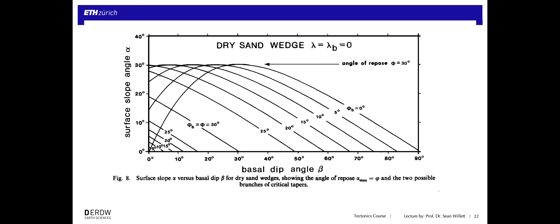For real accretionary wedges, we're mostly looking at basal dips under 10–20 degrees and surface slopes under 10–20 degrees. There is a complete set of solutions for this. For a dry sandbox — no fluid pressure, lambda = 0, no cohesion — there are two solutions for any given set of physical parameters, meaning for any given phi (internal angle of friction) and phi_b (basal friction angle). For phi = 30 degrees and phi_b = 20 degrees with a basal dip of 10 degrees, you get one solution with a surface slope of about 2 degrees, but also another solution with a surface slope of about 28 degrees.